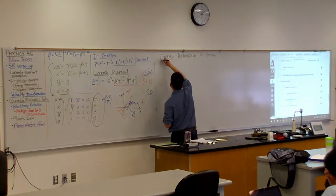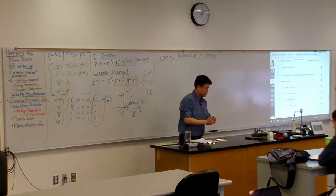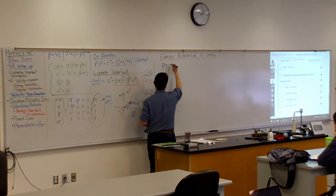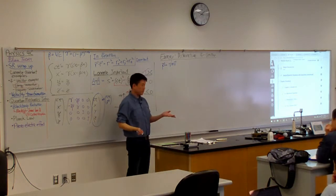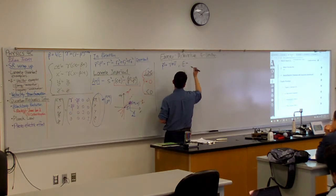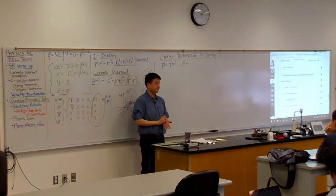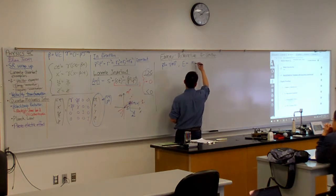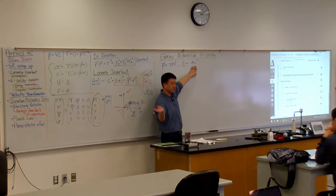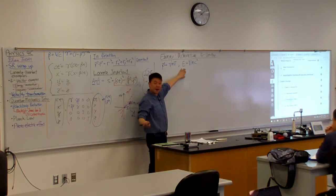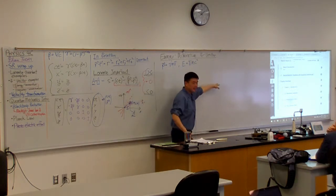We already covered the idea of relativistic energy and momentum. Let me just write down the formulas. Relativistic momentum was gamma mv. What was the expression for relativistic total energy? Mass energy plus kinetic energy. The expression for mass energy is mc squared, and to get to total energy it's just a simple modification: gamma mc squared. This is the expression for relativistic energy — it's a surprisingly simple expression. The kinetic energy is the complicated one because then you have to subtract out mc squared.